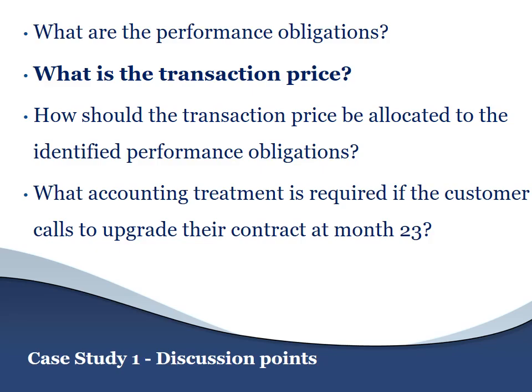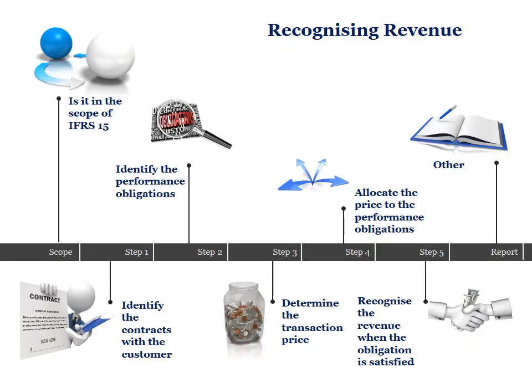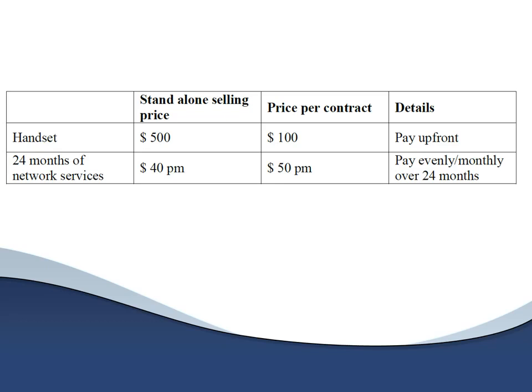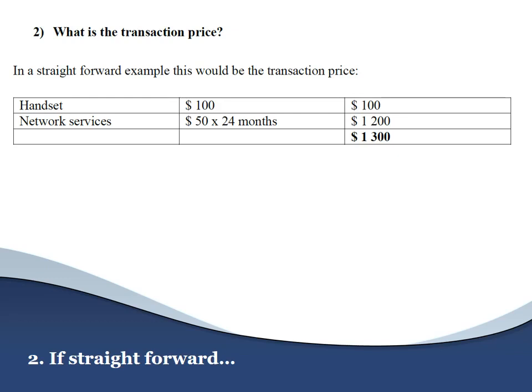The next thing we need to consider is what is the transaction price, looking at step 3. The handset is charged at $100 and the network services total consideration is $50 per month times 24 months, amounting to $1,200. So isn't it simple that the total transaction price is $100 plus $1,200, equaling $1,300? However, we need to bear in mind the clause that it is customary business practice for a customer to call after month 22 to request an upgrade or renewal. Does that bear any impact on the determination of the transaction price?